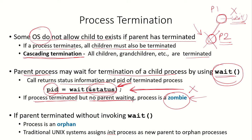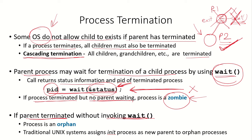In another situation, the parent terminated without invoking wait while the child process was still running. P1 has terminated using the exit system call, but the child process is still in the system. In that case, the process will become an orphan. Some Unix systems will assign the first process in the system — the init process, the root process — as the parent to the orphan processes.